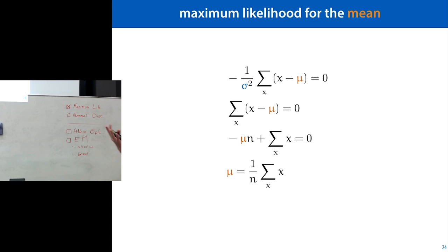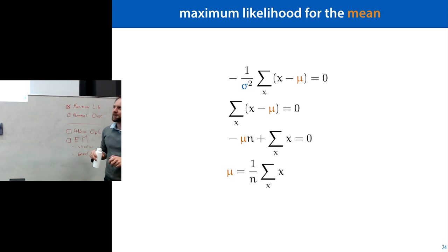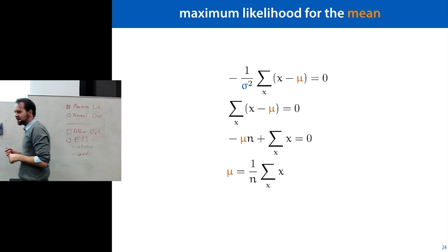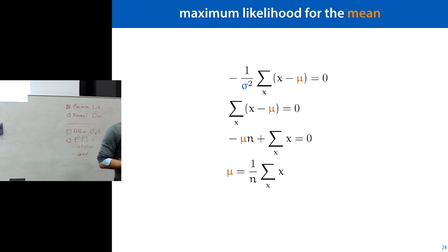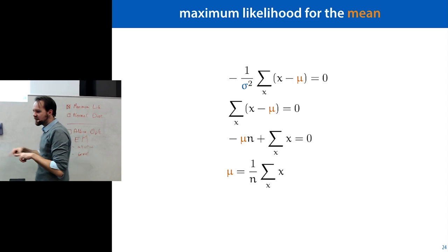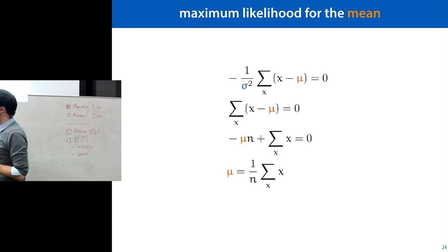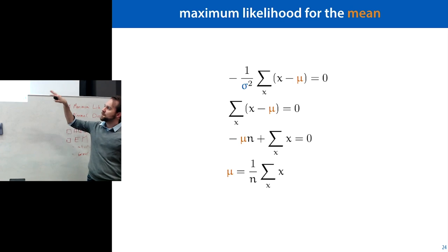So after all that, what we've proved is that the arithmetic mean is the maximum likelihood estimator for the mean of the normal distribution. Actually when Gauss invented the normal distribution, he did this the other way around: he started by saying the arithmetic mean is a natural estimator, then worked backwards to find what distribution would make the arithmetic mean the most likely estimator — and arrived at the normal distribution.